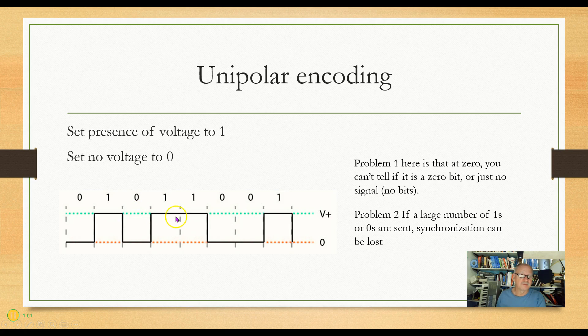The second problem is, if I have a large number of 1's and 0's, these little ticks here are time. So let's say that this duration here is a millisecond. What happens if I have a long string of 1's or a long string of 0's? I might lose that synchronization.